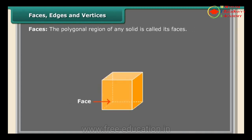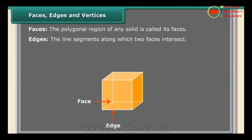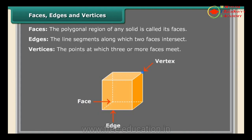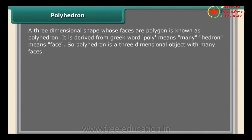Faces: the polygonal region of any solid is called its face. Edges: the line segments along which two faces intersect. Vertices: the points at which three or more faces meet. Polyhedron: a three-dimensional shape whose faces are polygons is known as a polyhedron. It is derived from the Greek word — 'poly' means many and 'hedron' means face, so a polyhedron is a three-dimensional object with many faces.